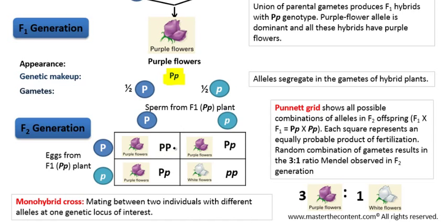For instance, crossing the dominant alleles gives a homozygous dominant genotype; crossing dominant with recessive gives a heterozygous genotype; another dominant-recessive crossing gives another heterozygous genotype; and the last cell gives a homozygous recessive genotype — those are the only ones that will be white. A cross involving heterozygous individuals like those in the F1 generation is called a monohybrid cross — a mating between two individuals that have different alleles at one genetic locus of interest, where the character studied is governed by two or more alleles at a single gene locus.